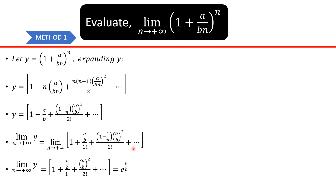So we're left with 1 plus (a over b) over 1 factorial, plus (a over b) squared over 2 factorial, plus (a over b) cubed over 3 factorial, and so on. You notice that 1 plus (a over b) over 1 factorial plus (a over b) squared over 2 factorial plus (a over b) cubed over 3 factorial is the expansion for e raised to the power a over b.